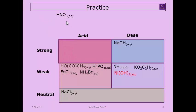Nitric acid: using the H-plus-one rule, one hydrogen plus one gives two, and two is less than the three oxygens — so that's considered a strong acid.